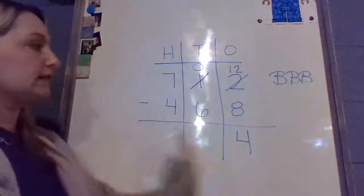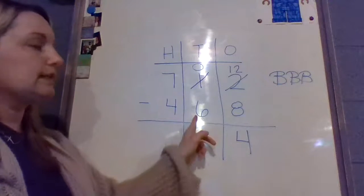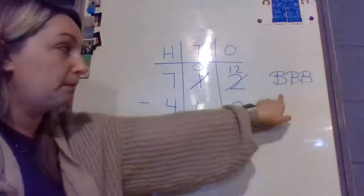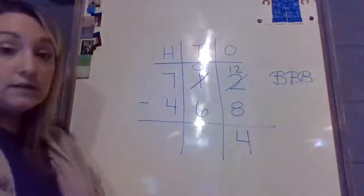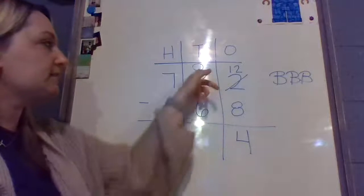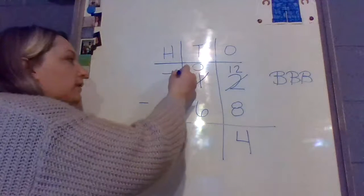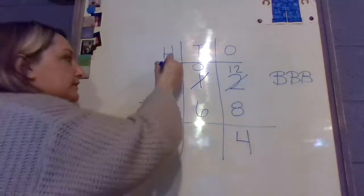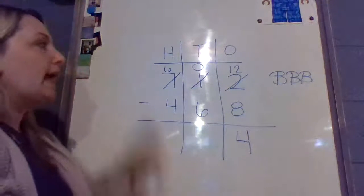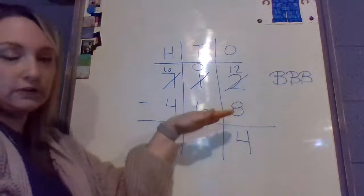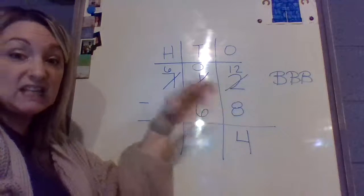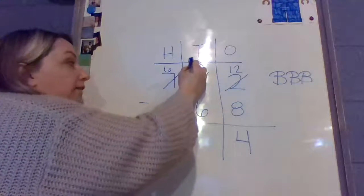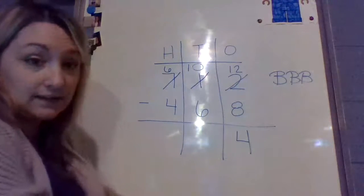All right, now we're going to go to our 10s place. Is 6 bigger than 0? Because we have to do our BBB rule. Bottom number is bigger. We have to borrow. Yes, 6 is bigger than 0, so we have to borrow again. So we're going to borrow from the 100s place. We're going to take one of these 100s, so we're left with 6 100s, and we're going to move that group of 100s over, which is the same as 10 10s. So I'm going to add 10 10s to that 0 10, so I now have 10 in the 10s place.